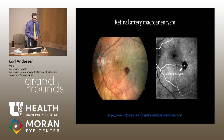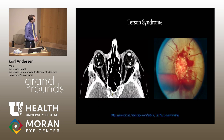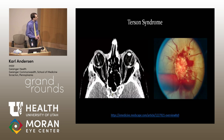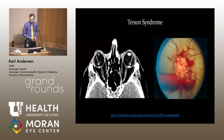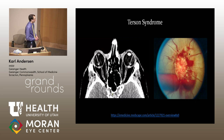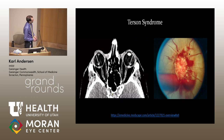Retinal artery macroaneurysm, typically in patients who are hypertensive, can become weaker and progress, then bleed into the vitreous. A really interesting one is Terson syndrome — if somebody has a subarachnoid hemorrhage, there's a possibility that the blood will track down through the optic nerve sheath and go straight into the eye, producing a visually significant vitreous hemorrhage. There you can see it on the CT scan, the little bit of blood there.